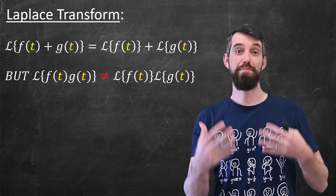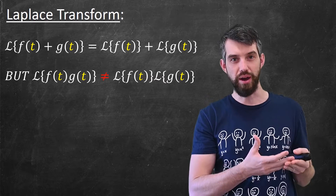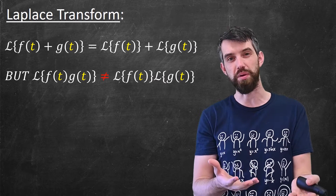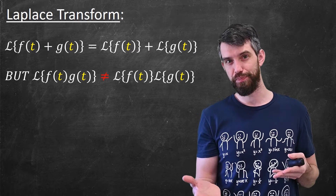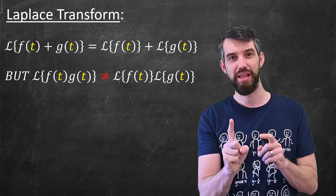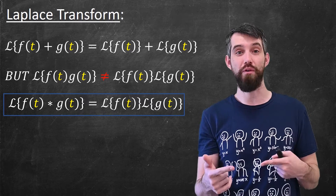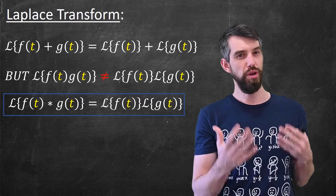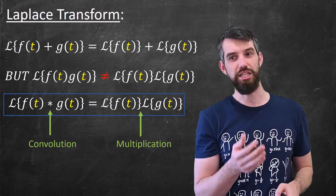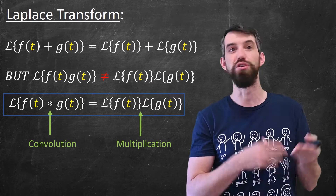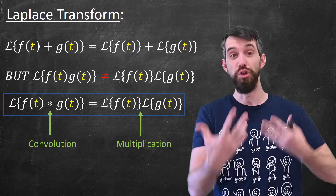This is perhaps to be expected — we know that the derivative of a product is not the product of the derivatives; it obeys the product rule. We know that the integral of a product is likewise not the product of two different integrals; there's integration by parts for that. So the Laplace transform, which is some sort of integral formula, should not be expected to work out nicely for products, and indeed it doesn't. But it does work out nicely for convolutions. If instead of f times g, I take the Laplace transform of f convoluted with g, then it is just going to be the Laplace transform of f multiplied by the Laplace transform of g.